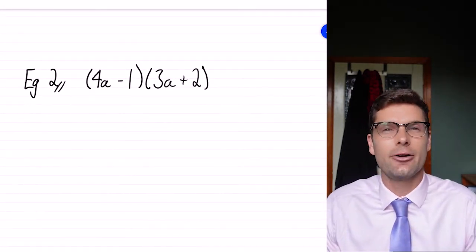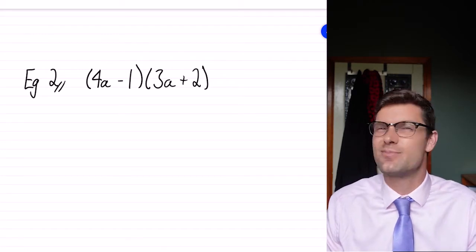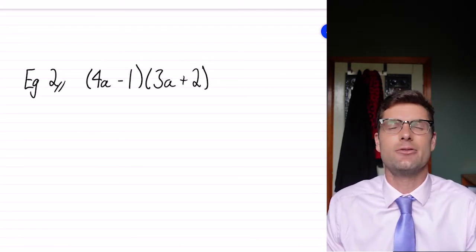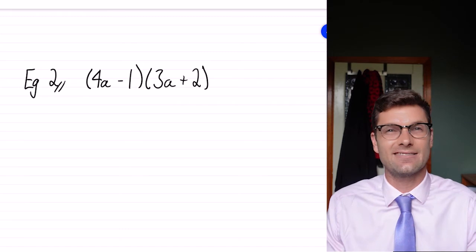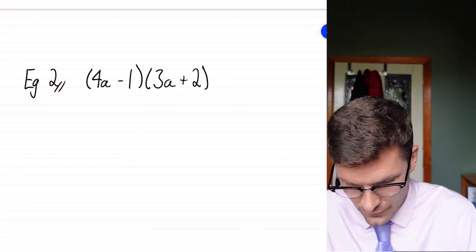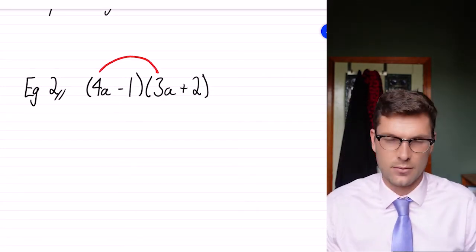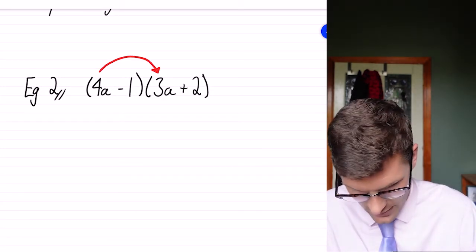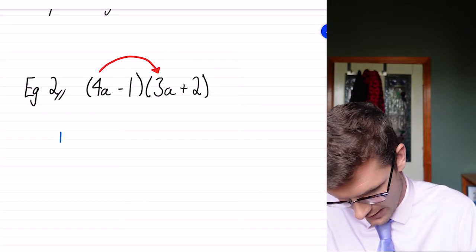So we can see in a slightly harder example, things can change around. But once we've got that scaffold down, we're not going to miss anything. The multiplication is still pretty easy. So for this one, we're going to do the first two terms. So 3a multiplied by 4a. And that becomes 12a squared.